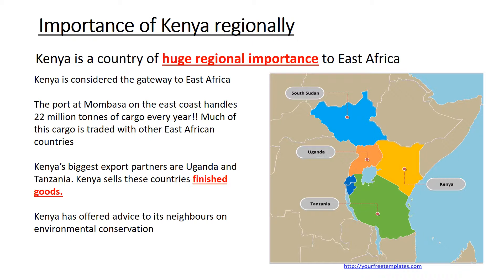Somalia to the north isn't a particularly safe place for cargo ships, so products sold to South Sudan, Uganda, Tanzania, and Ethiopia will come through Kenya instead, as it is considered a safer port. This makes Kenya incredibly important to neighbouring countries as a trading partner — cargo comes into Kenya, and Kenya then exports it to countries like Uganda and Tanzania.